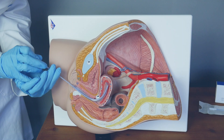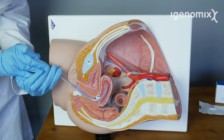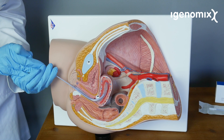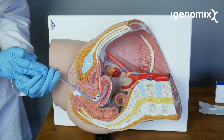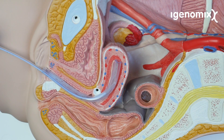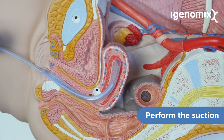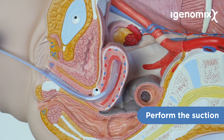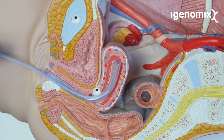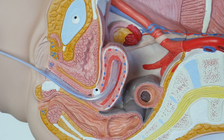Once inside, keep the catheter or cannula in a fixed position inside the uterine cavity. Connect the 10 milliliter syringe and perform constant suction while scraping the walls of the endometrial cavity from above, about three or four times.